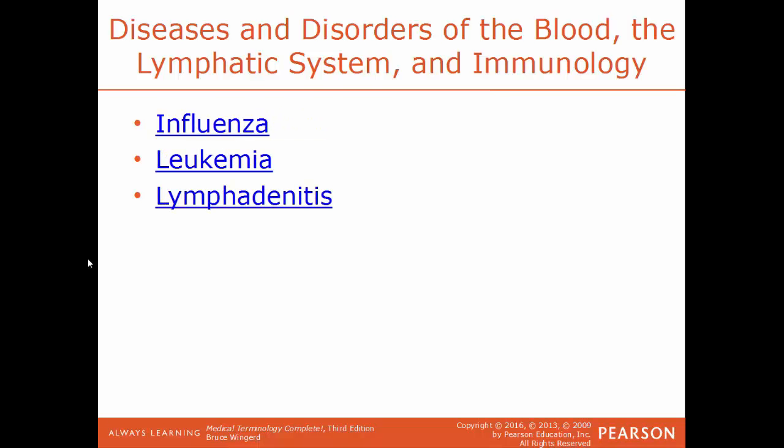Influenza is the full name for the flu — a very common viral infection. Leukemia is a progressive disease where bone marrow continues to make a higher number of immature or non-functioning blood cells, particularly white blood cells, suppressing the production of healthy white blood cells. It is a cancer of blood-forming tissues like bone marrow. Lymphadenitis is an inflammation of the lymph nodes, often caused by a bacterial infection.